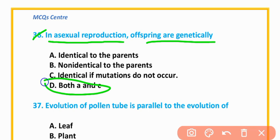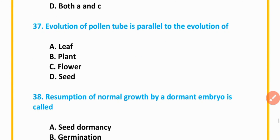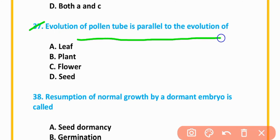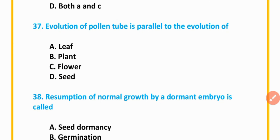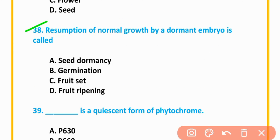MCQ number 36: In asexual reproduction, offspring are genetically identical to the parents — both A and C — identical, as mutation does not occur. Option C is correct. MCQ number 37: Evolution of the pollen tube is parallel to the evolution of the seed. Option D is correct.